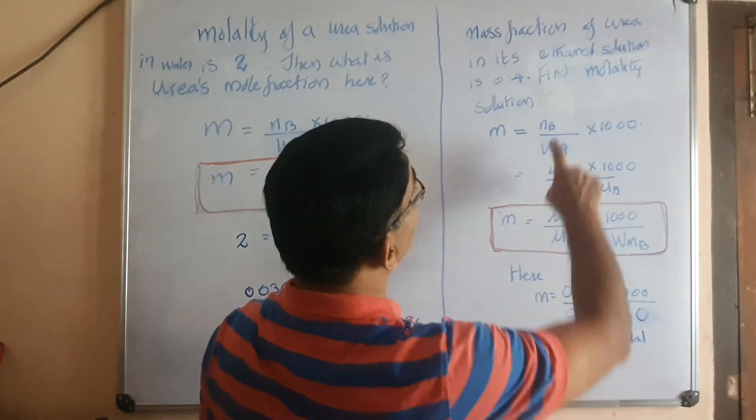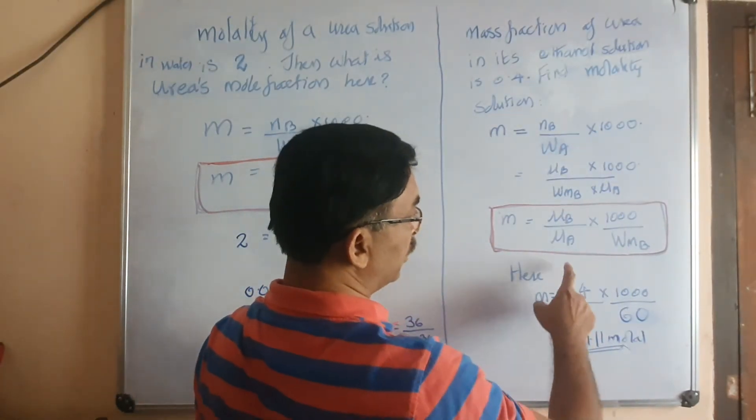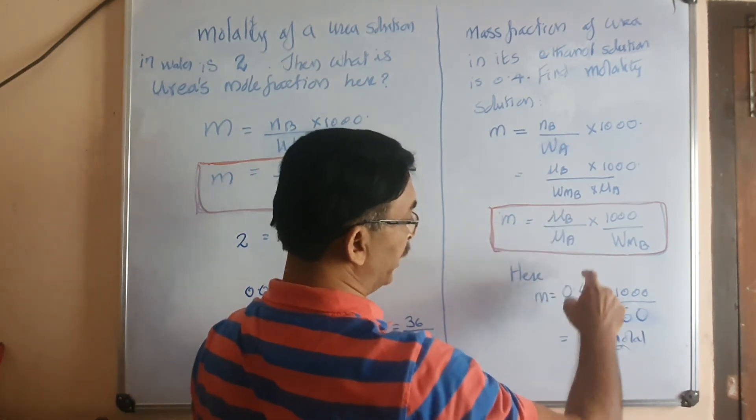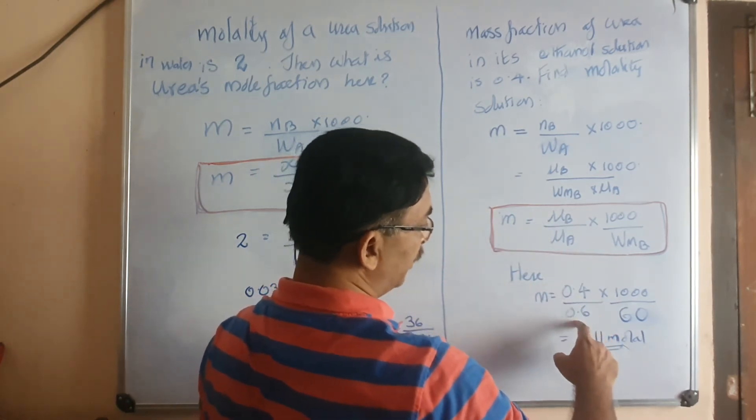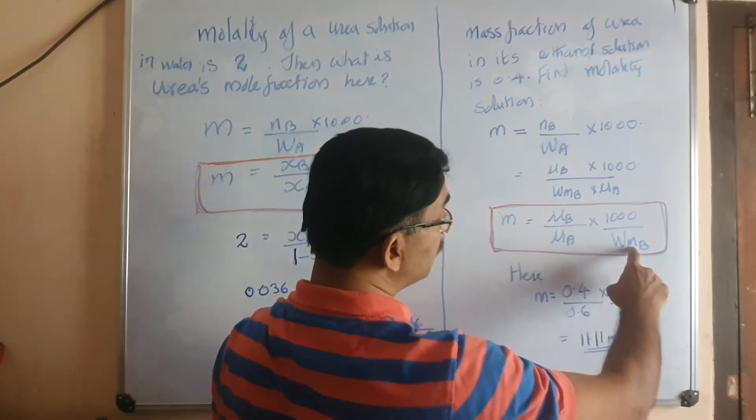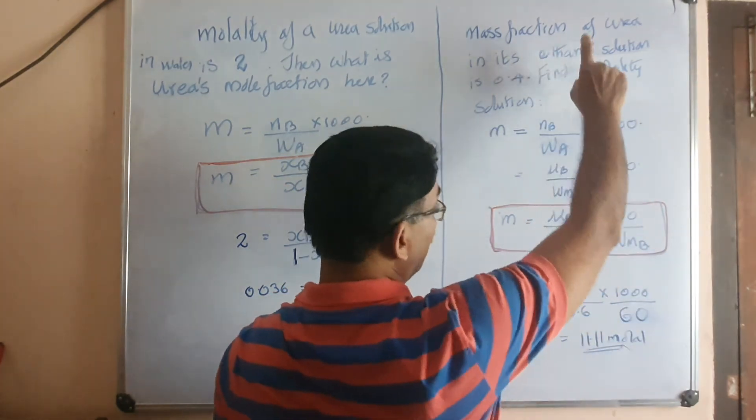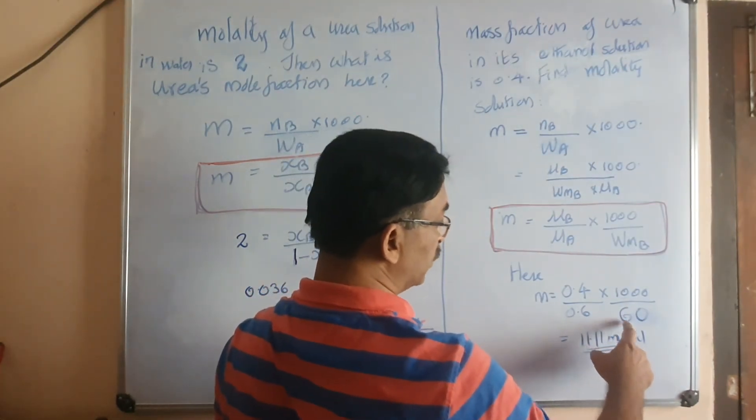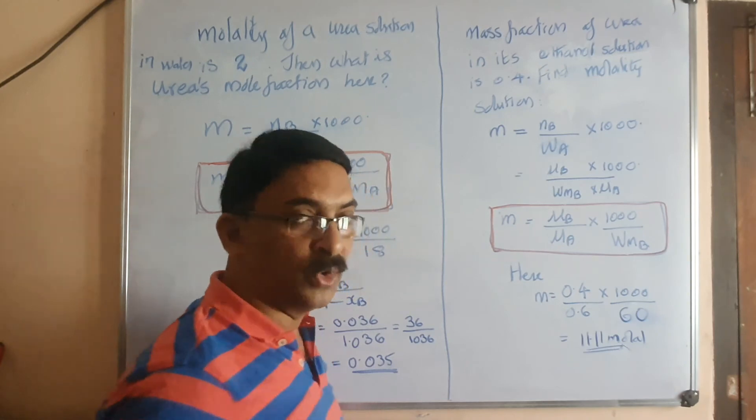Now we directly substitute here: 0.4 by 0.6, because μb is μb divided by 1 minus μb, that is μa. 0.4 by 0.6 times 1000 by molecular mass of solute. The solvent is ethanol, but its molecular mass doesn't come into the picture. 60 is the molecular mass of the solute, then you get 11.11 molar.